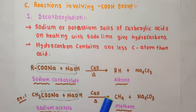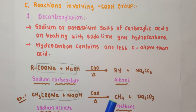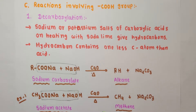You can see that one carbon atom less is present in the alkane as compared to the carboxylic acid. So if you take sodium propanoate, which has three carbon atoms, upon heating with soda lime you will get ethane, because one carbon atom is removed. So you get ethane from sodium propanoate.